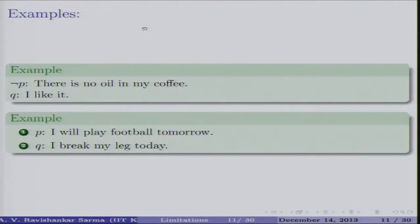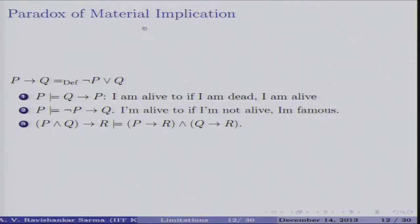One example: let not-P mean 'there is no oil in my coffee' and Q mean 'I like it.' Substituting into the inference 'not P implies (Q implies P)' gives the counter-intuitive result that 'there is no oil in my coffee implies that there is oil and I like it.' Similarly, 'I will play football tomorrow implies that I will play football tomorrow if I break my leg today' — completely against intuition. These problems suggest we need to move beyond classical logic and consider relevance logics.